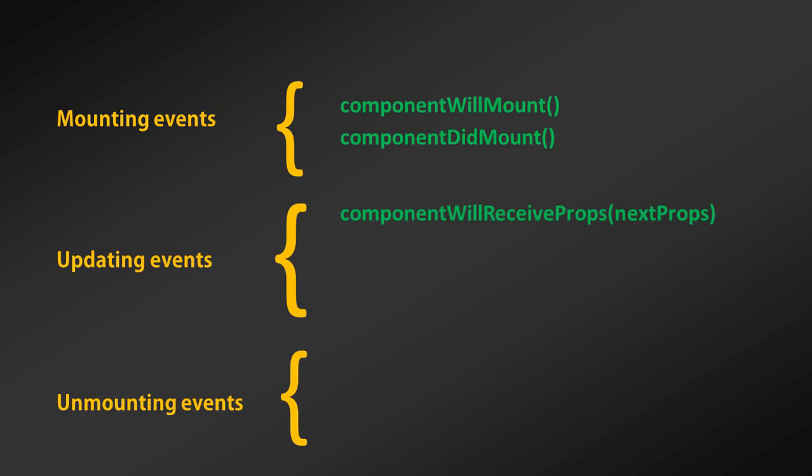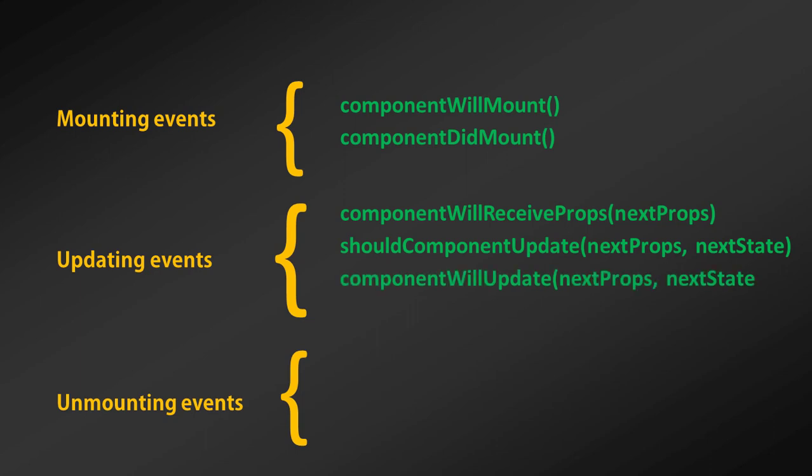Then we have updating events. In this event, we have four methods. First, componentWillReceiveProps, which means it handles new properties. Then we have shouldComponentUpdate. Then we have componentWillUpdate. And the last is componentDidUpdate. componentWillReceiveProps will happen when the component is about to receive properties. shouldComponentUpdate returns a boolean value and lets you optimize component re-rendering by determining when to update and when not to. componentWillUpdate happens right before the component is updated. And componentDidUpdate happens right after the component is updated.